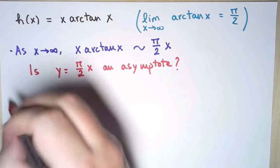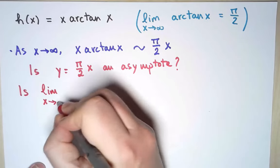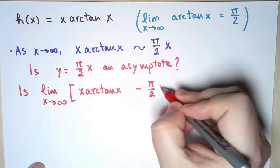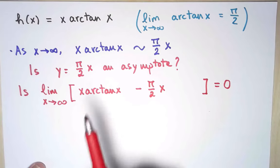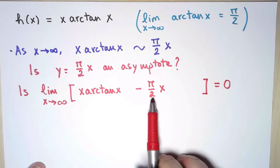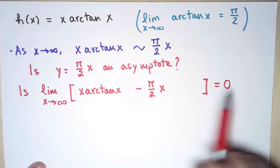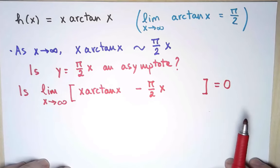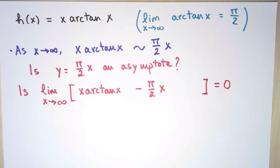For it to be an asymptote, I would need the following condition. I would need the difference between the function and the potential asymptote to have limit zero at infinity. I don't know if this is going to work, but it's the only idea I have so far. So let's try to prove it.